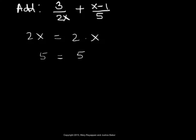The second step is to list the factors of the first denominator. The factors of the first denominator, 2x, are 2 and x. Now include any unlisted factors from the second denominator. The second denominator is 5, and the only factor here is 5. So we list that along with the previously written factors, giving us 2, x, and 5.